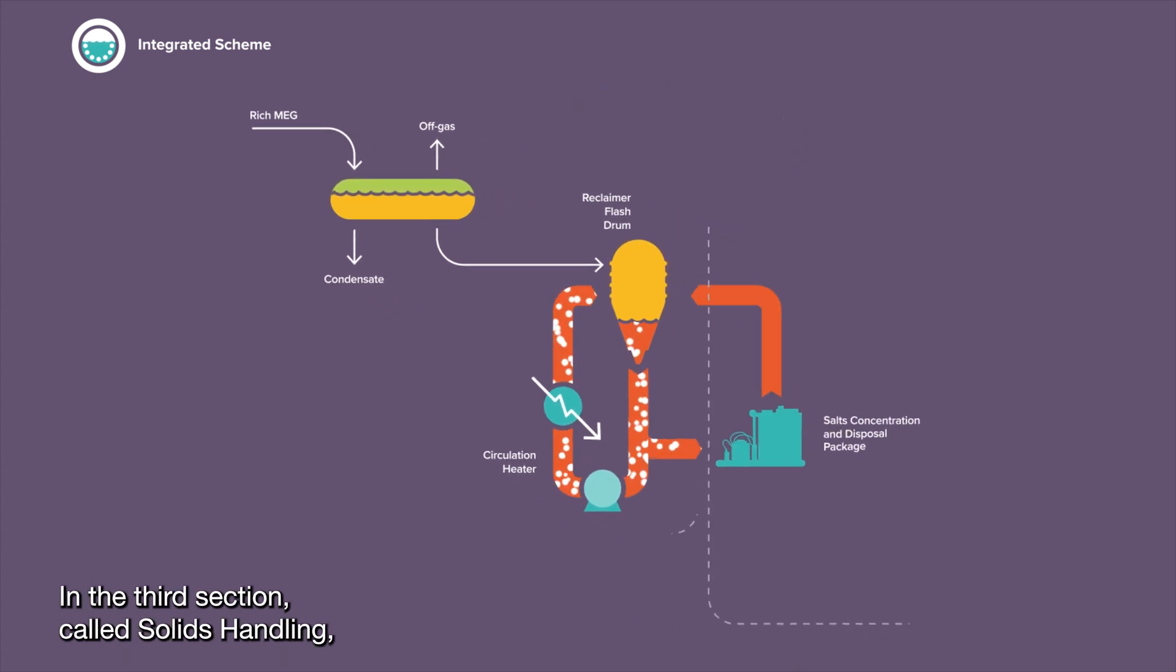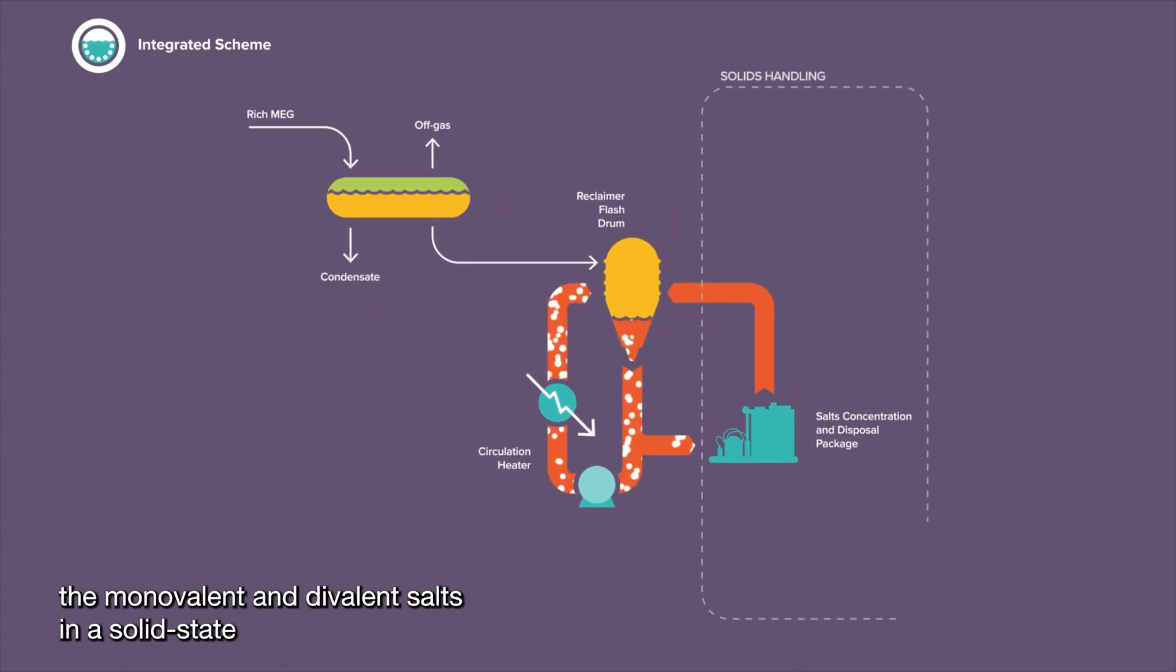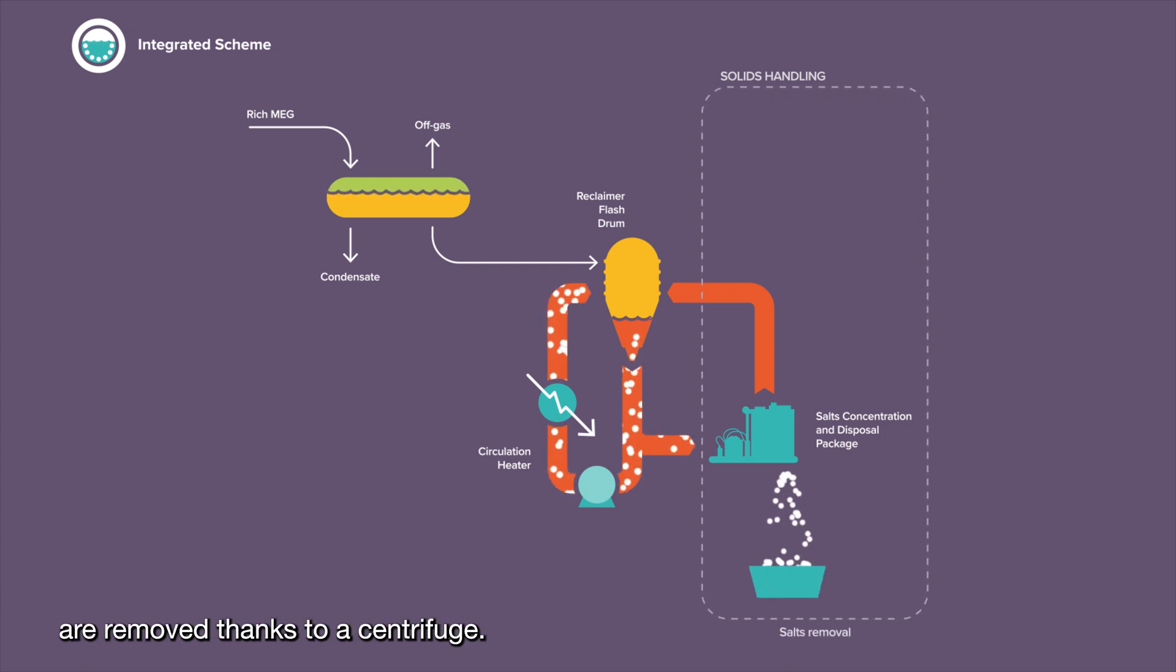In the third section, called solids handling, the monovalent and divalent salts in a solid state are removed thanks to a centrifuge. A dry salt cake for disposal is produced.